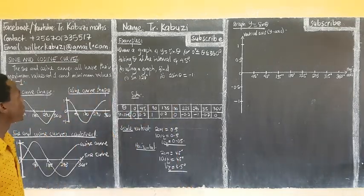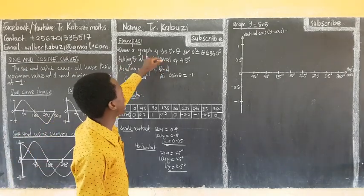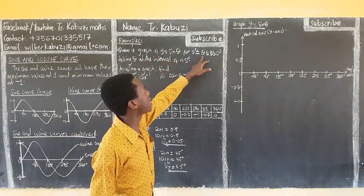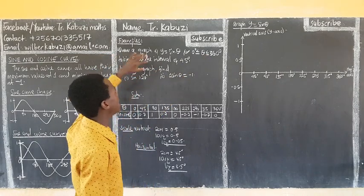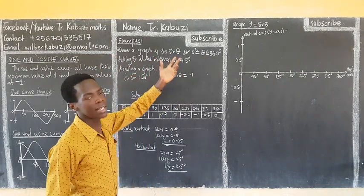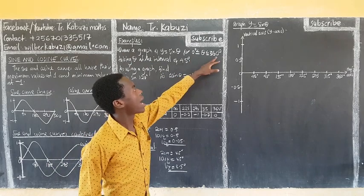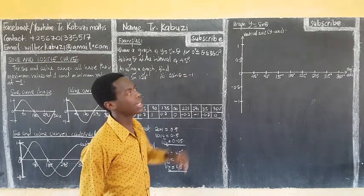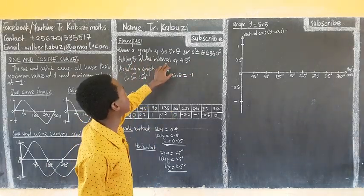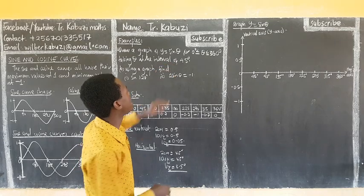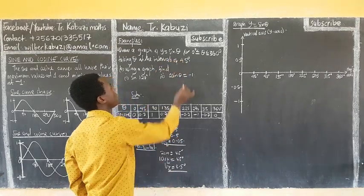Let us go through the examples. Draw a graph of y = sine(θ) for 0 degrees less than or equal to θ, less than or equal to 360 degrees. We are going to test that our theta is starting from 0 up to 360 degrees, taking theta at an interval of 45 degrees.